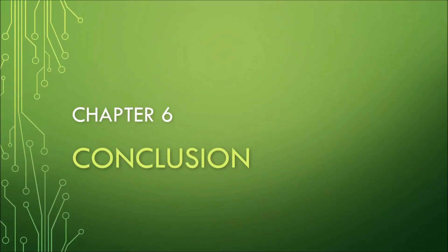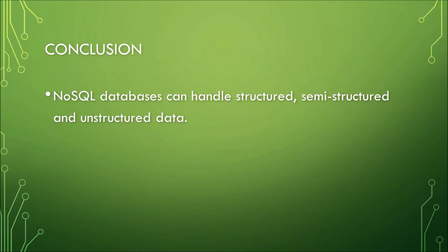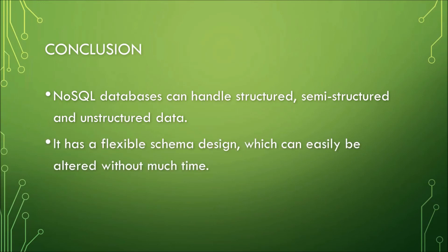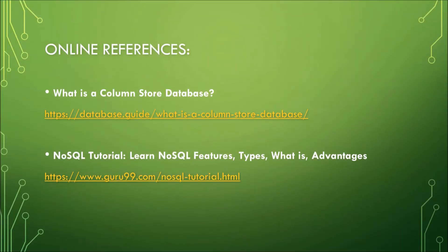So we have now finished the five parts of this NoSQL video series. In conclusion, we can say that NoSQL databases can handle structured, semi-structured, and unstructured data. It has a flexible schema design which can easily be altered without much time. We have known about key-value pair, document-oriented databases, graph databases, and this video is about column store database. We can further conclude that the implementation of NoSQL databases are simple compared to relational databases.